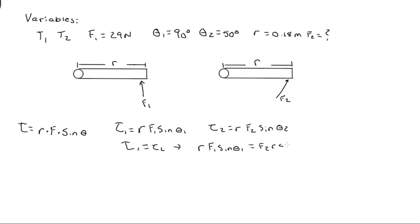Since we know all variables except for F2, we can isolate that on one side of the equation. We do this by dividing out R and sine A2, so we are left with the equation F2 is equal to F1 times R times sine A1 divided by R times sine A2.